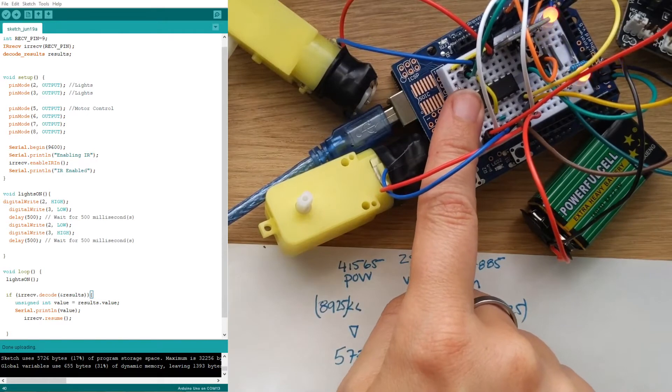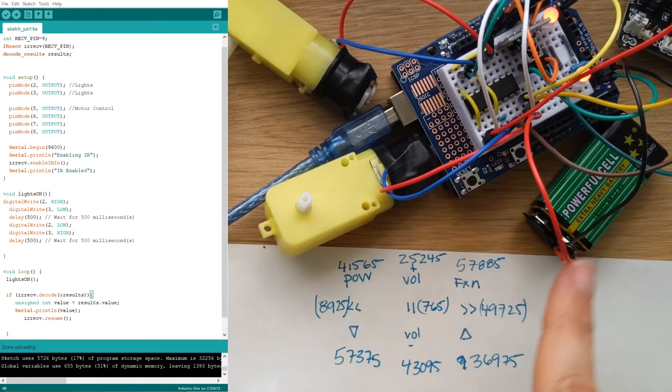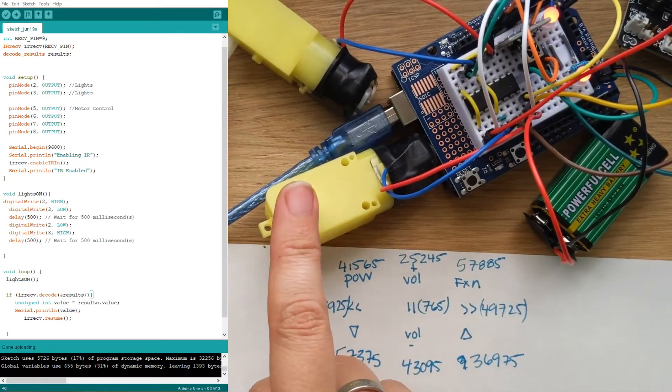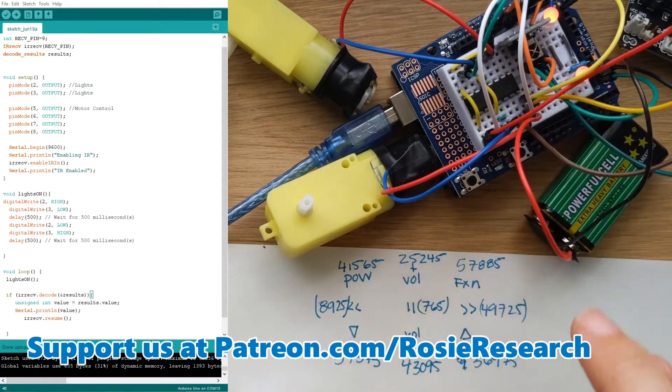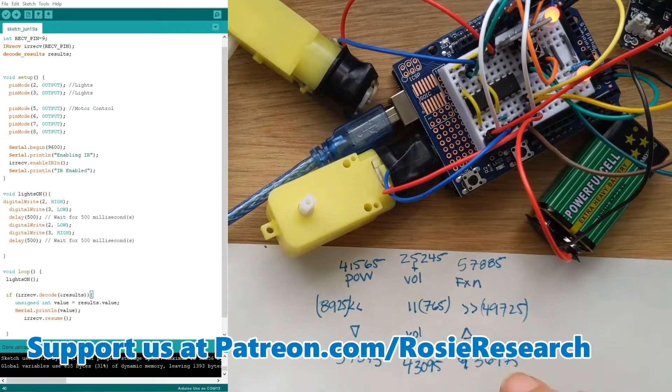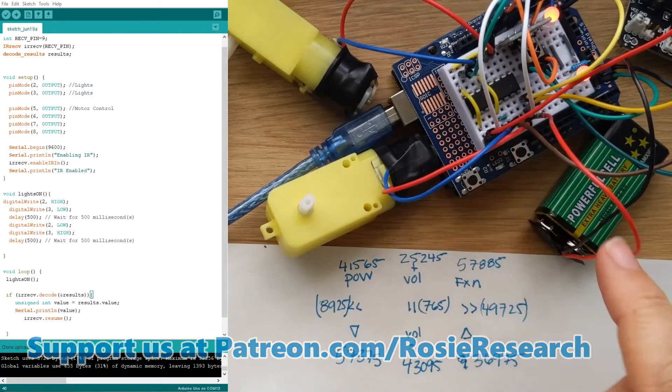We used our motor driver here with some extra power to drive these motors and we know that they turn on because we did that in a previous lesson. Now we're going to use this little IR receiver to control whether they are on or off and I'm really excited about that. This will be a lot of fun.